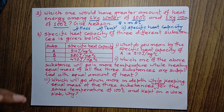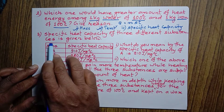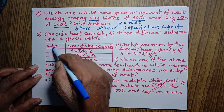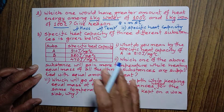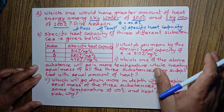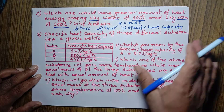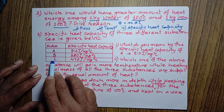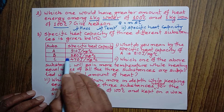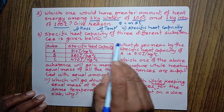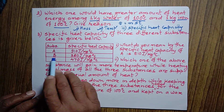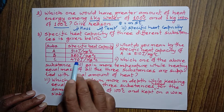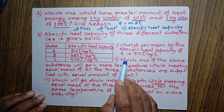Now let's go to another question. The specific heat capacity of three different substances is given. Substances are written A, B and C. Specific heat capacity of A is 910 joule per kg degree Celsius, B is 380 joule per kg degree Celsius, and C is 470 joule per kg degree Celsius.